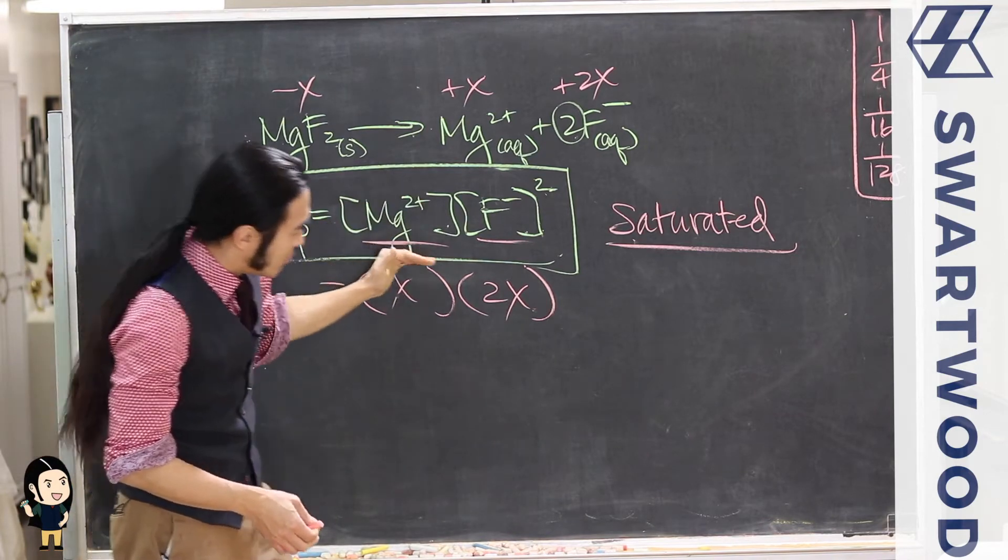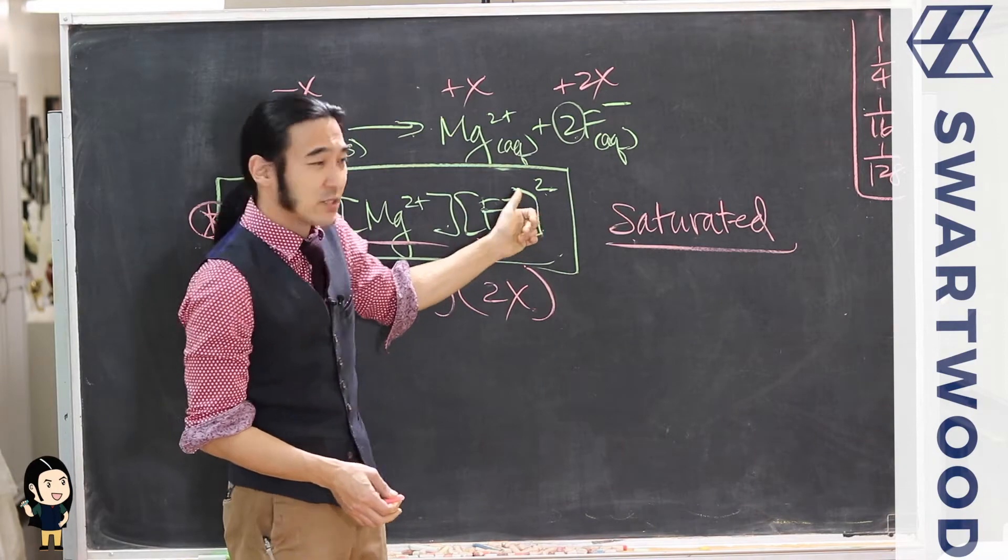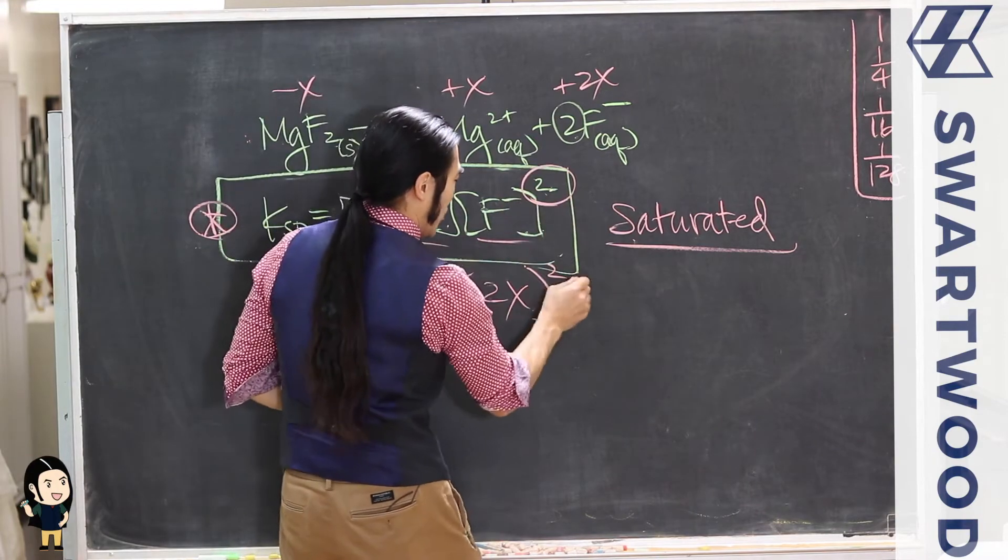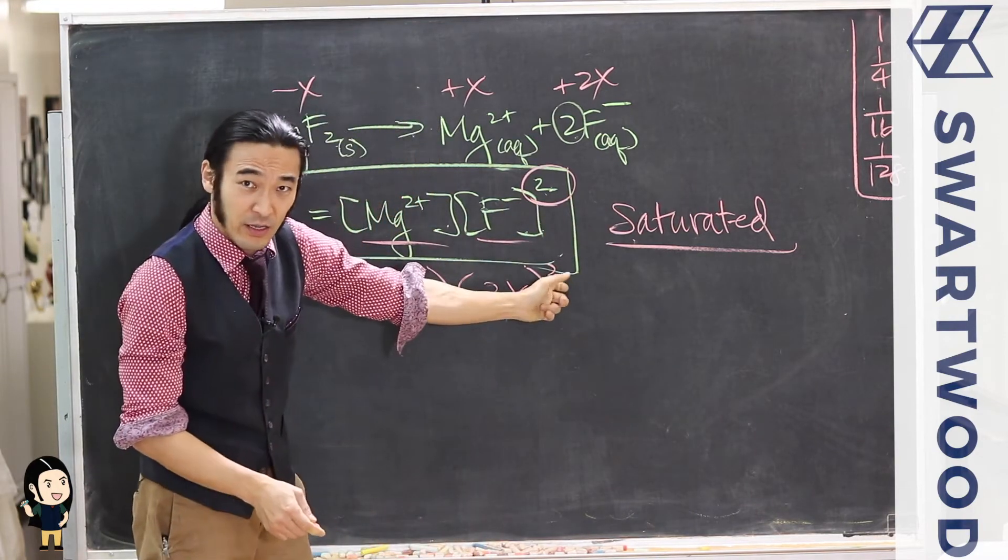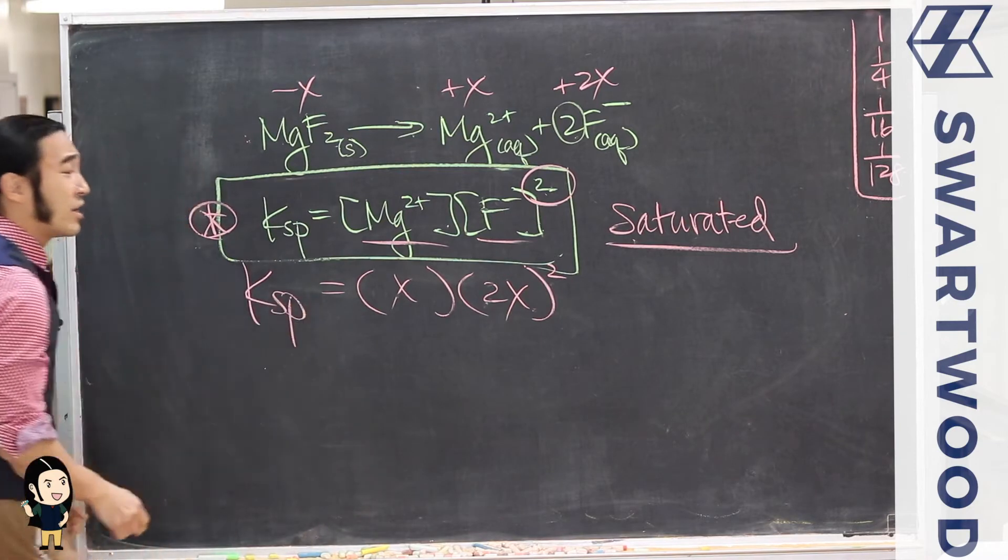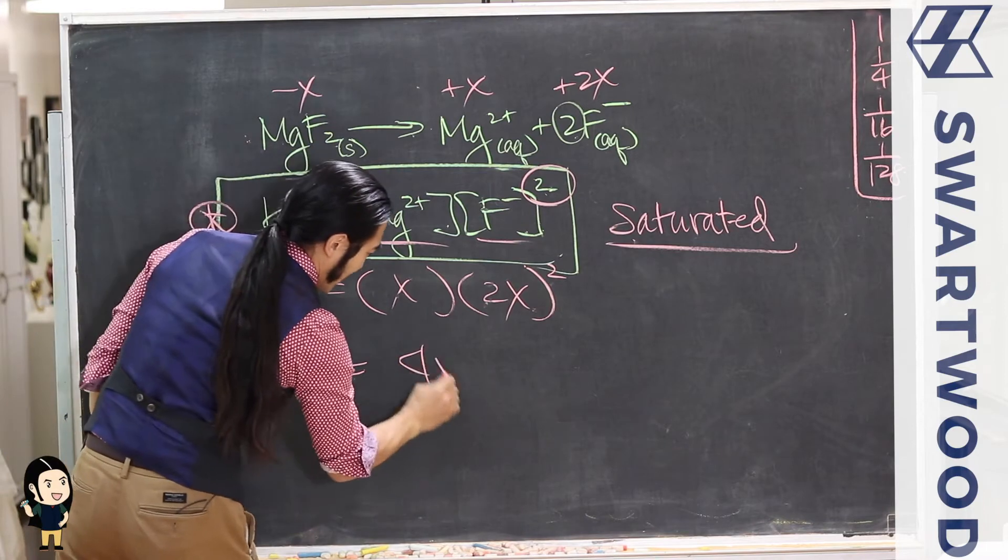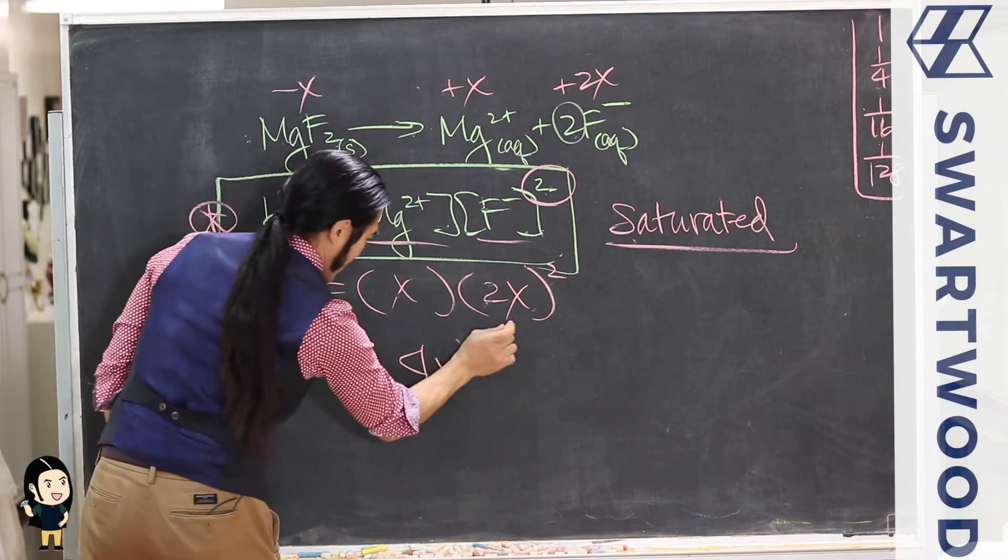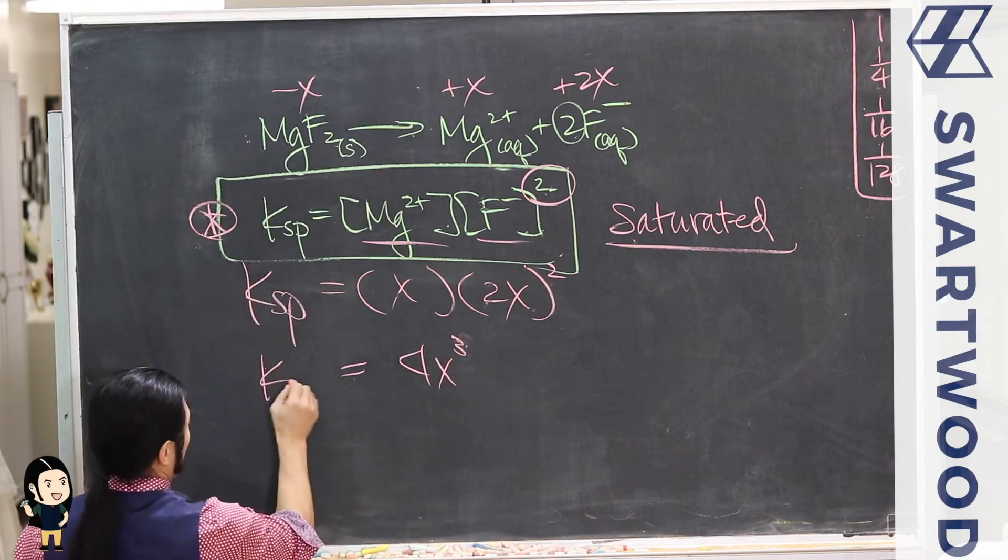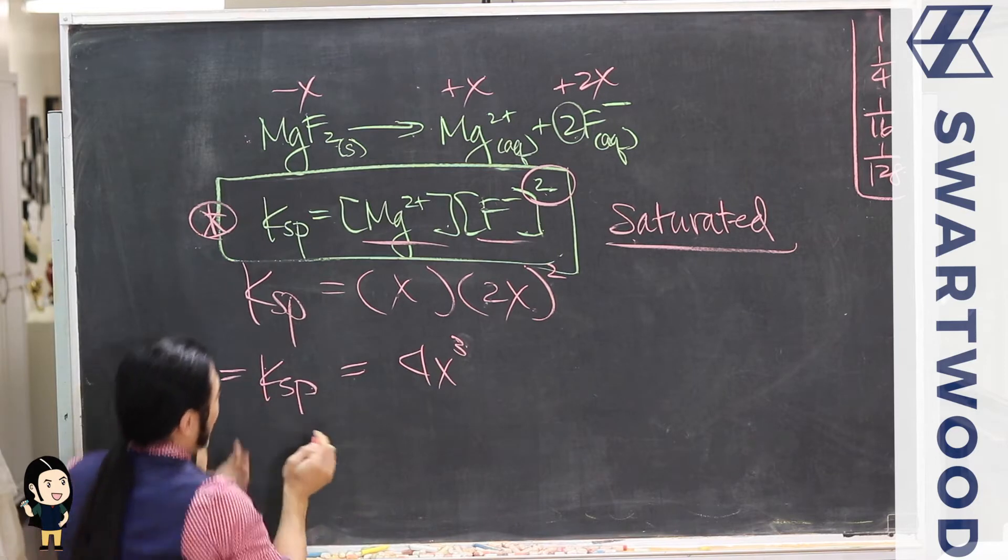You guys agree? Now if we follow that recipe, the KSP says if you take the Mg²⁺ concentration and you multiply it by the concentration of F⁻—don't forget the x squared guy here, it's like a double whammy—then these guys will give you a constant called the KSP. And in this case, you'll get 4x³ = KSP.